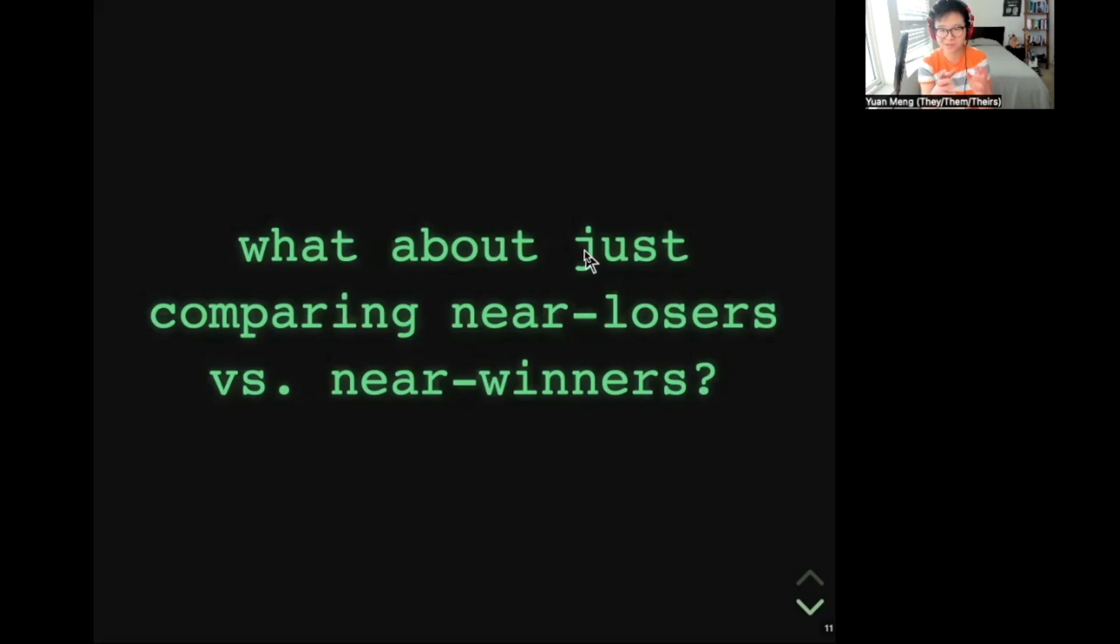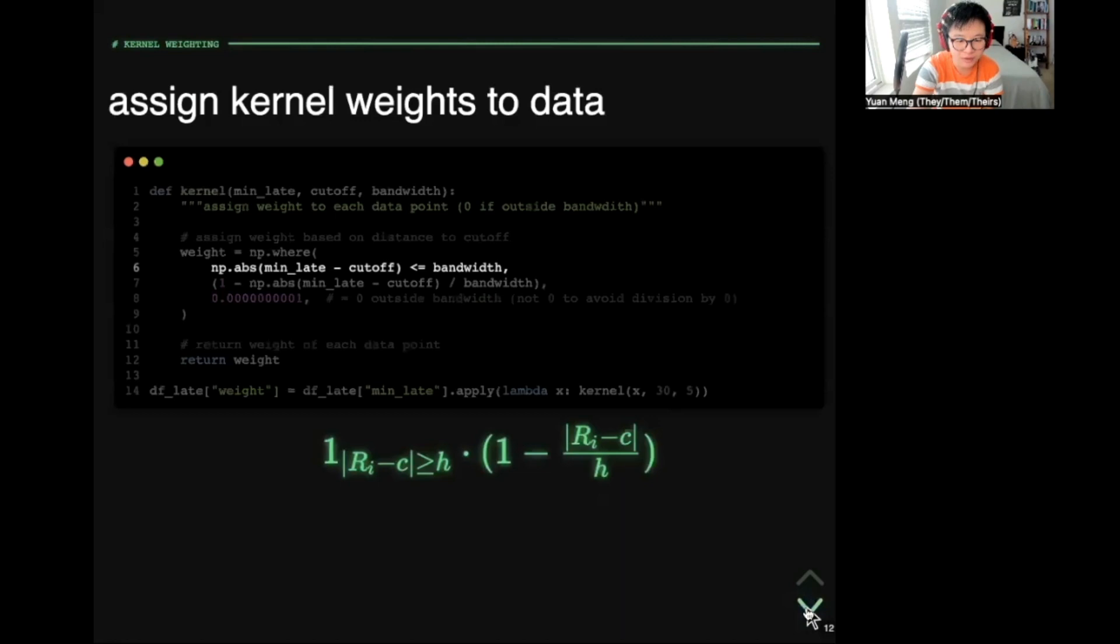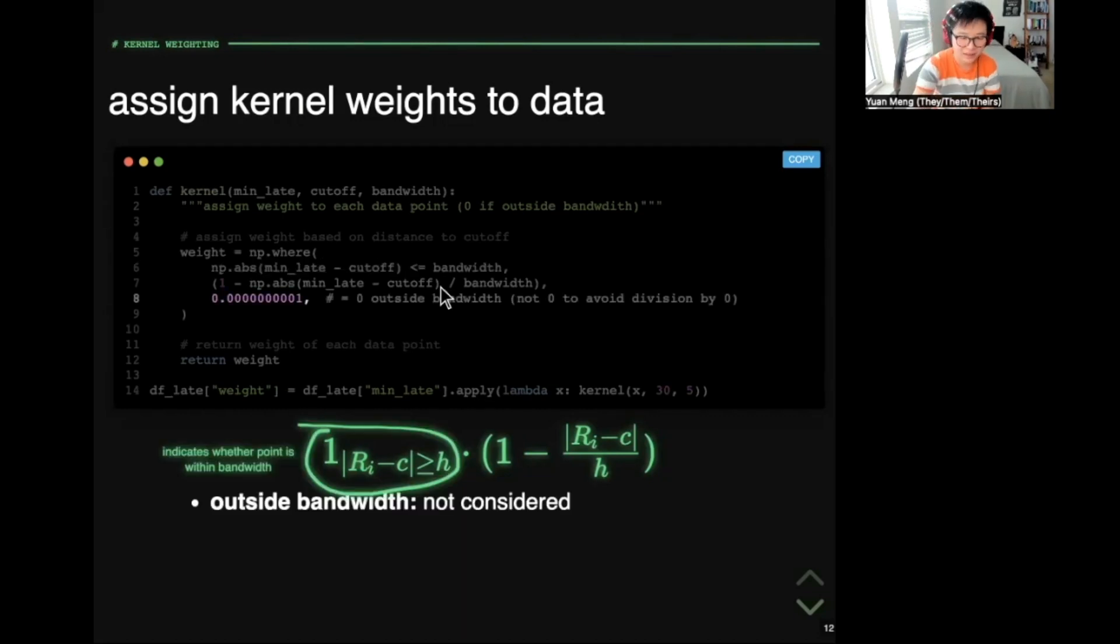We can set a bandwidth around the cutoff, like five minutes, and orders outside of the bandwidth will be discarded, so they will be assigned a weight of zero. In practice, you may want to give it some small values rather than exactly zero to avoid a potential division by zero error.